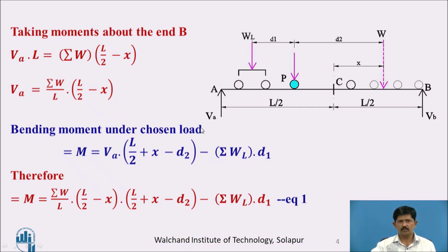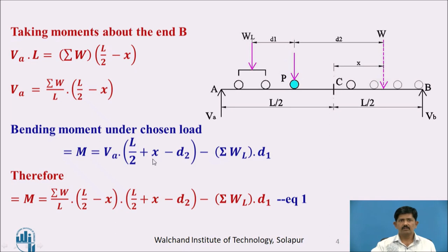Now to find the bending moment under the chosen wheel load, considering the left hand section: M equals VA into (L/2 plus X minus D2), minus the resultant load on the left hand side, summation of WL, into the distance D1. Substituting VA, M equals summation of W by L into (L/2 minus X)(L/2 plus X minus D2) minus summation of WL into D1. This is equation number 1.